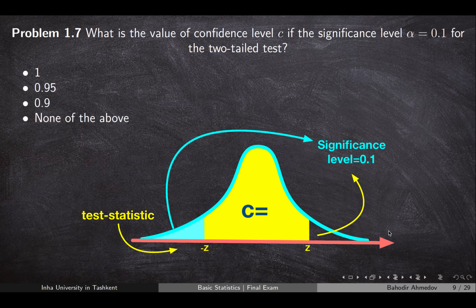Problem number seven: what is the value of the confidence level for the two-tail test if the significance level is 0.1? A two-tail test means that the areas on both tails should sum to the level of significance. The level of significance is 10%, meaning this area plus that area equals 0.1. Then the area in the middle is going to be 0.9, since the total area under the curve equals 1.